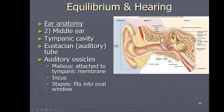The middle ear is this cavity right here. The big feature is you have bones in here called auditory ossicles — these are the bones used in hearing. There are three in each ear: the malleus, the incus, and the stapes. The malleus is supposed to look like a hammer or mallet, the incus is the middle one, and the stapes is supposed to look like a stirrup — if you look closely you can see how you might fit your foot in there.